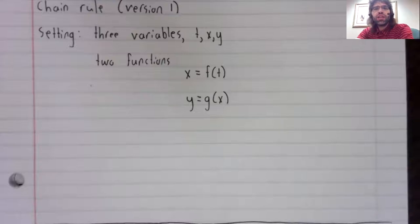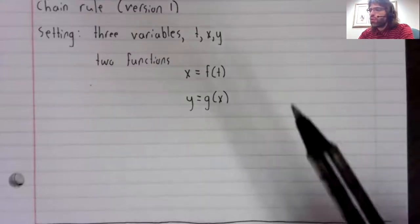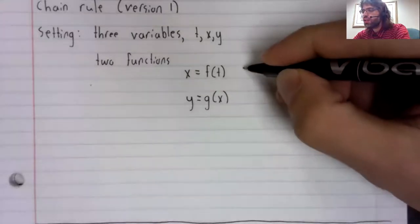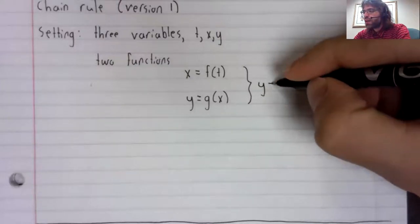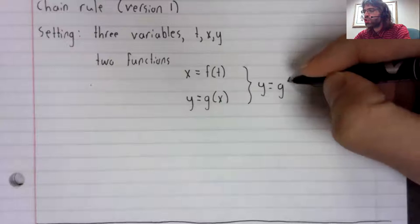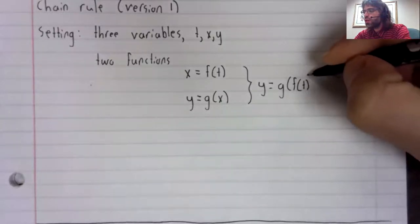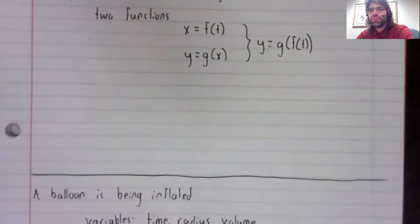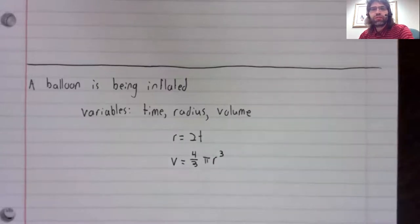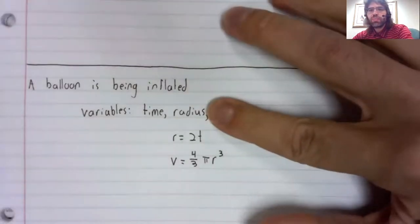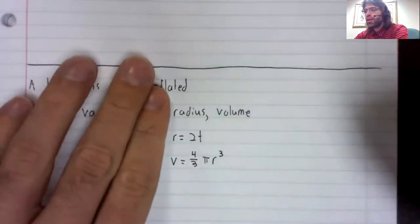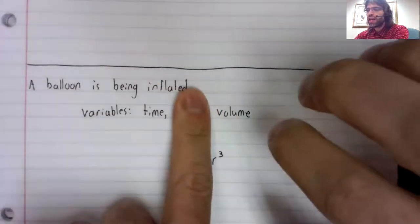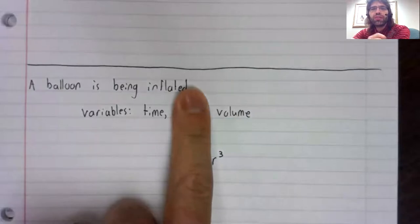But what's the chain rule for? Well, if y is a function of x and x is a function of t, then by the power of composition, y is a function of t. We've chosen to frame this by saying that the radius depends on the time and the volume depends on the radius, but it would also be true to say that the volume depends on the time.